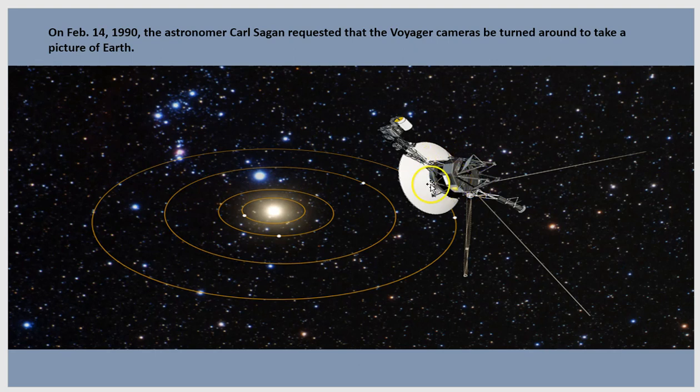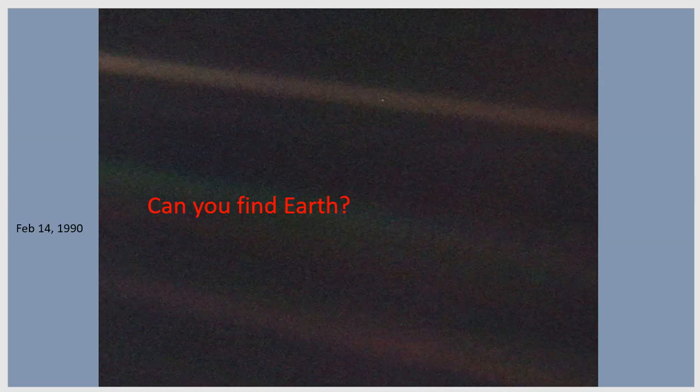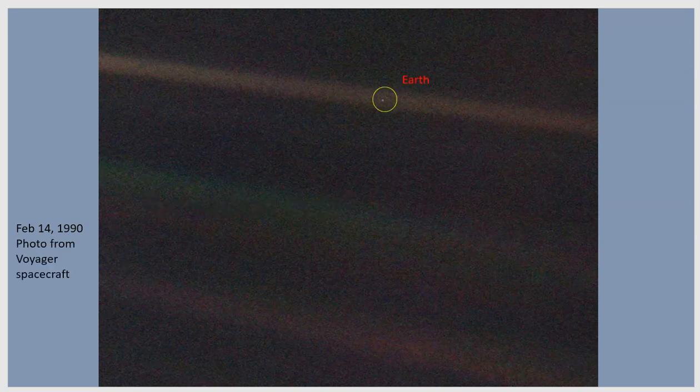This is the Voyager spacecraft that is now leaving our solar system. It was launched in the 70s to study the outer planets. It is now leaving, and prior to leaving, Carl Sagan asked the team to turn the camera back around to take a picture of our Earth. Our Earth is somewhere in this picture. Can you find it? There it is. That's our home. And when you look at a picture like this, we do seem like we're living on some tiny little speck in a much vaster universe.